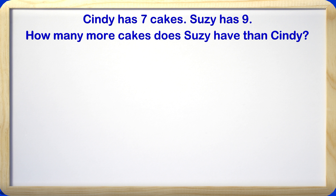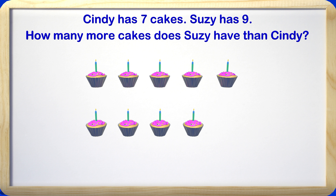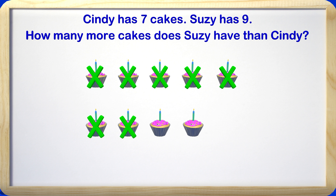The problem says Cindy has 7 cakes and Susie has 9. How many more cakes does Susie have than Cindy? This is similar to problems we just went over. In this problem we are going to use subtraction to find out how many more cakes Susie has than Cindy. Let's start by drawing the 9 cakes Susie has. To find out how much more, we are going to cross out the 7 cakes that Cindy has to show us how many are left: 1, 2, 3, 4, 5, 6, 7. We have crossed out 7 cakes. How many are left? 2 cakes! Susie has 2 more cakes than Cindy does.